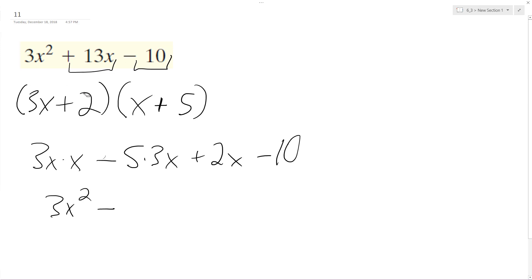So I need to make this a positive 5 and this needs to be a negative 2. So positive and this becomes negative. So we end up with positive 13x and we still got our negative 10.